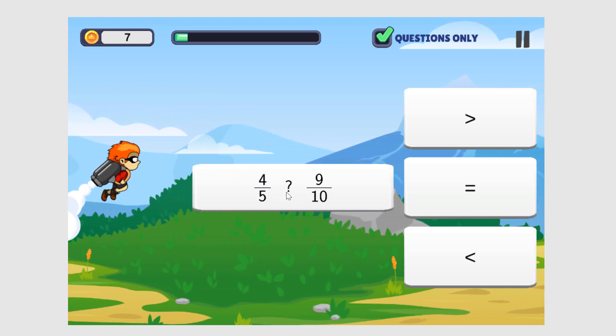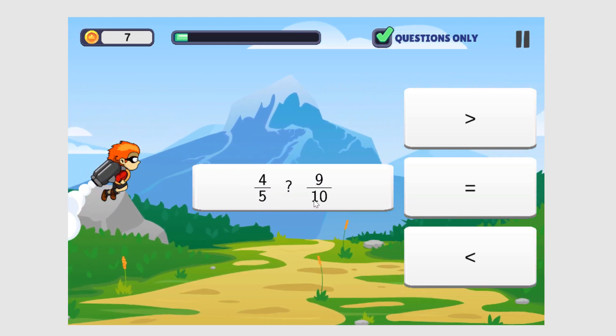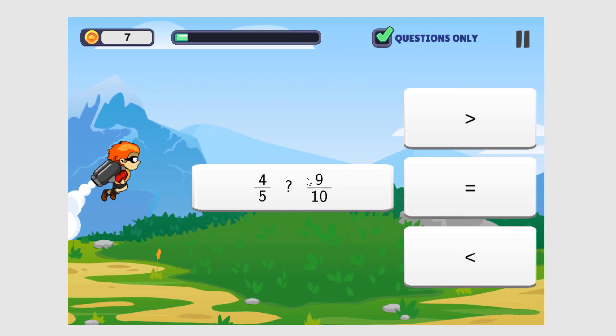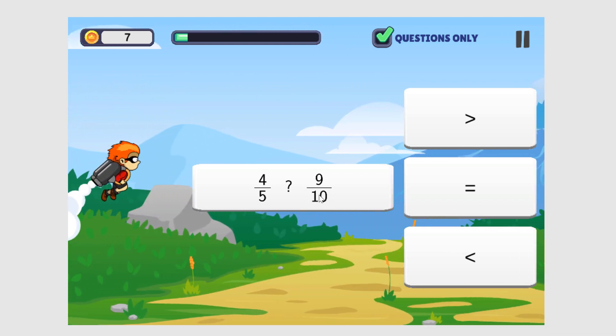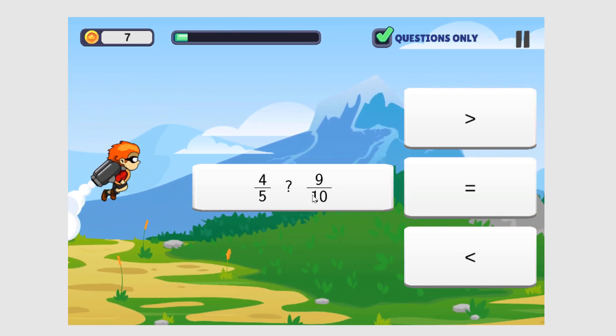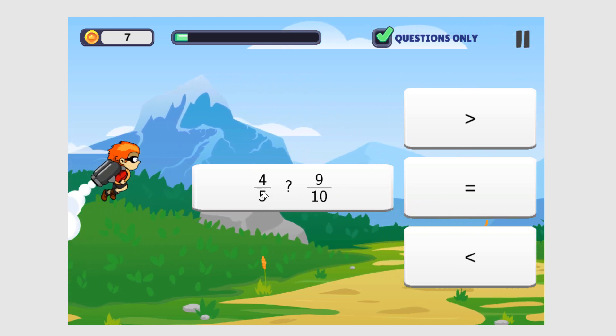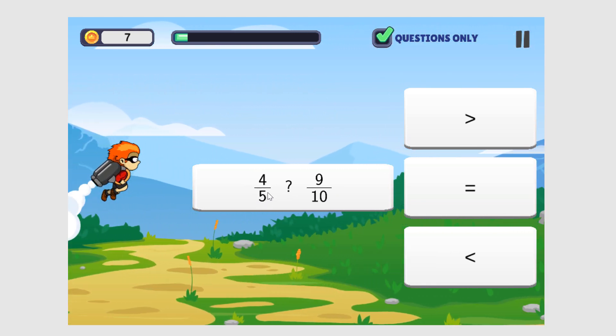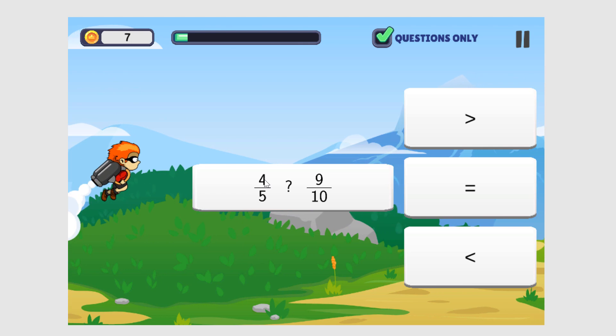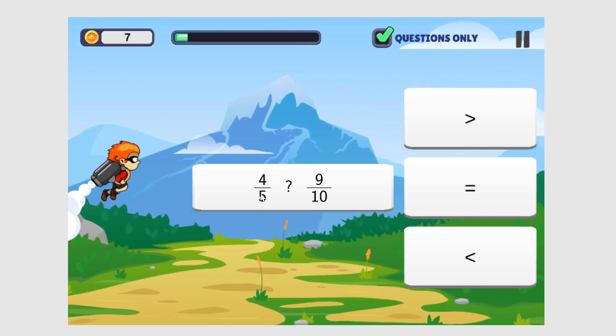4 fifths compared to 9 tenths. Well, we can't simplify 9 tenths. There's nothing we can divide each one by. But we can make 4 fifths more complex. We can multiply the numerator and the denominator by 2.